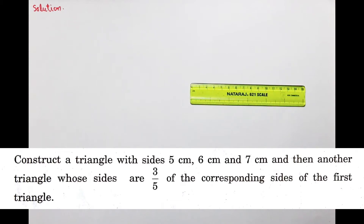Construct a triangle with sides 5 cm, 6 cm and 7 cm, and then another triangle whose sides are 3/5 of corresponding sides of the first triangle.